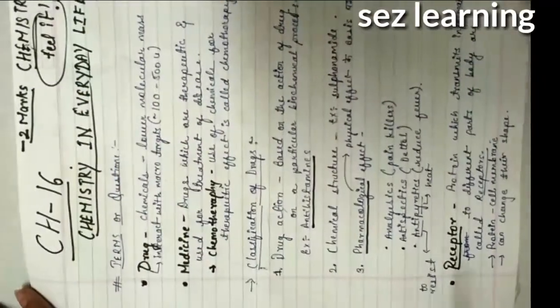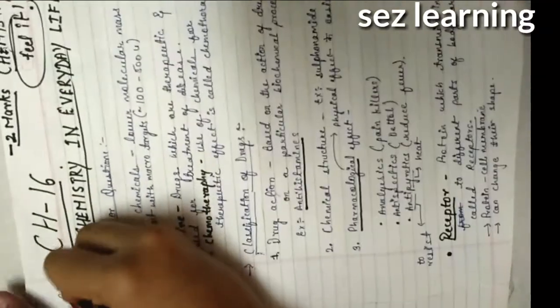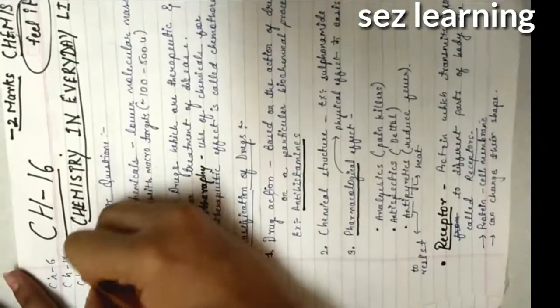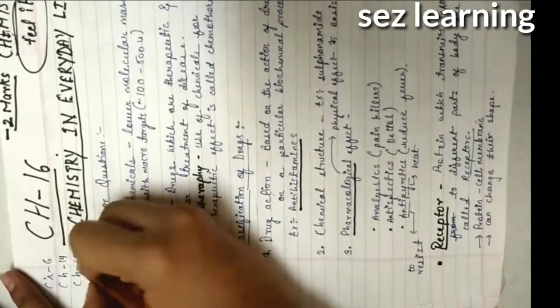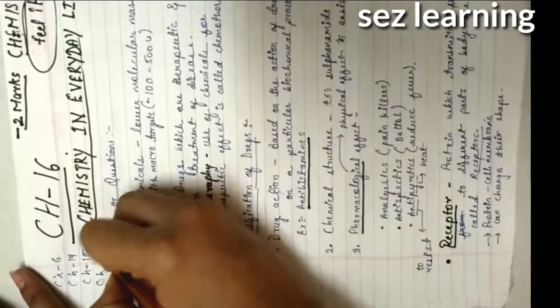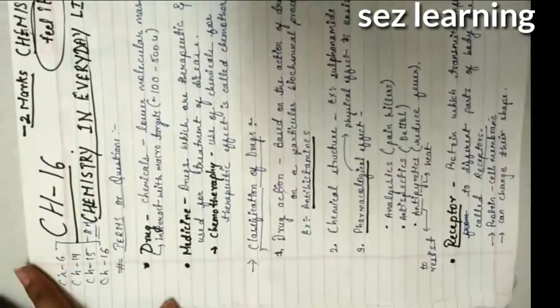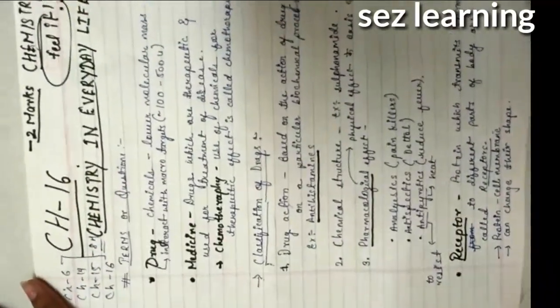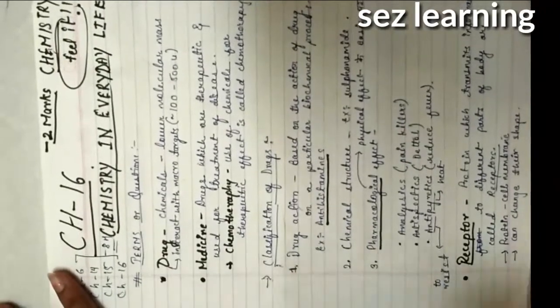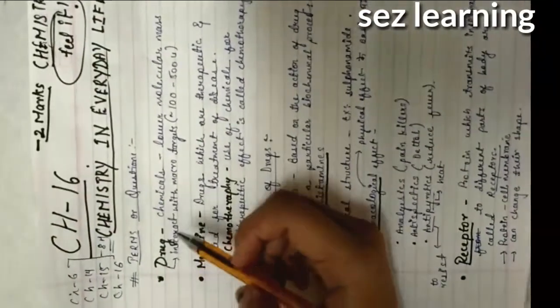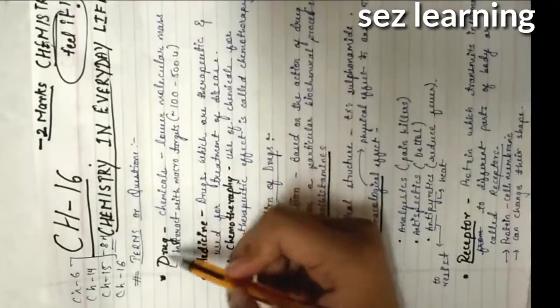We have four chapters - Chapter 6, Chapter 14, Chapter 15, and Chapter 16. Together they carry 8 marks. We need to score all 8 marks. So let's start with the terms. Sabse pehla hai - drugs.